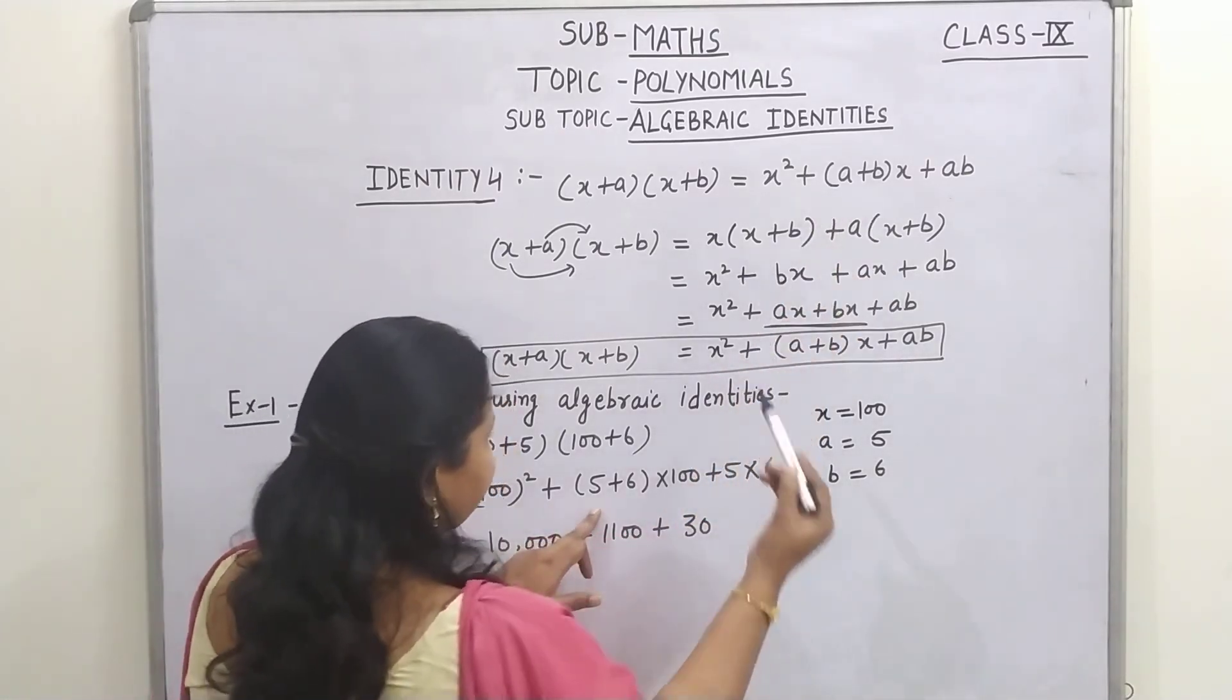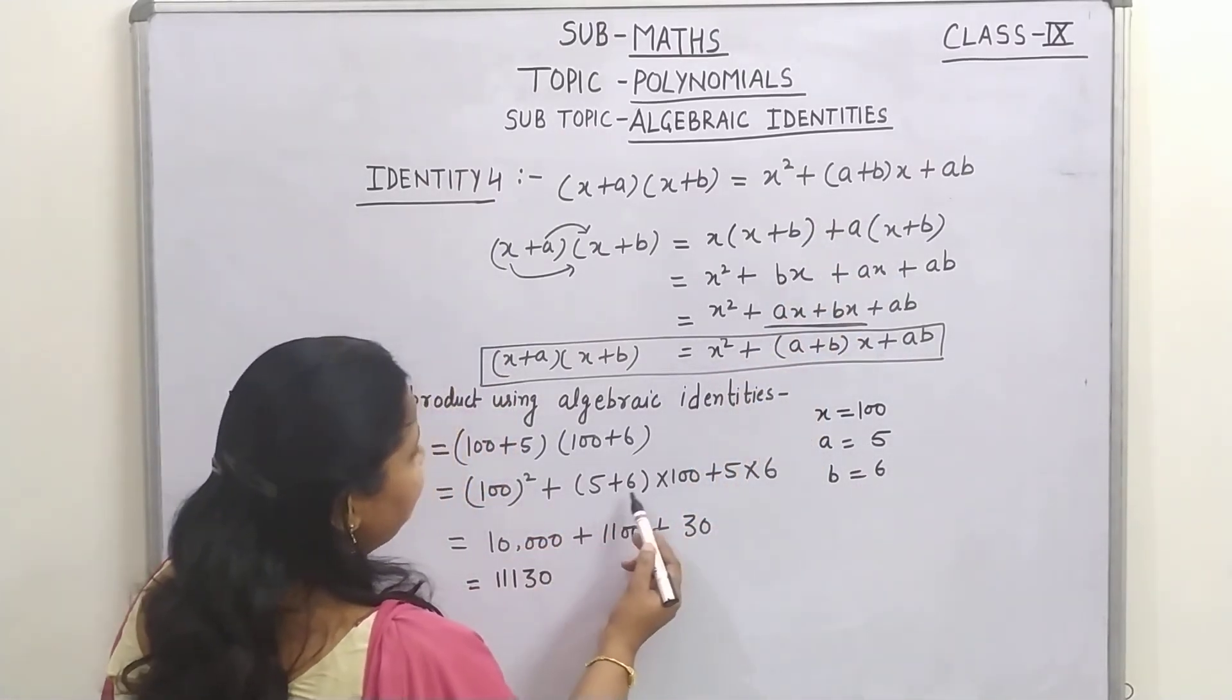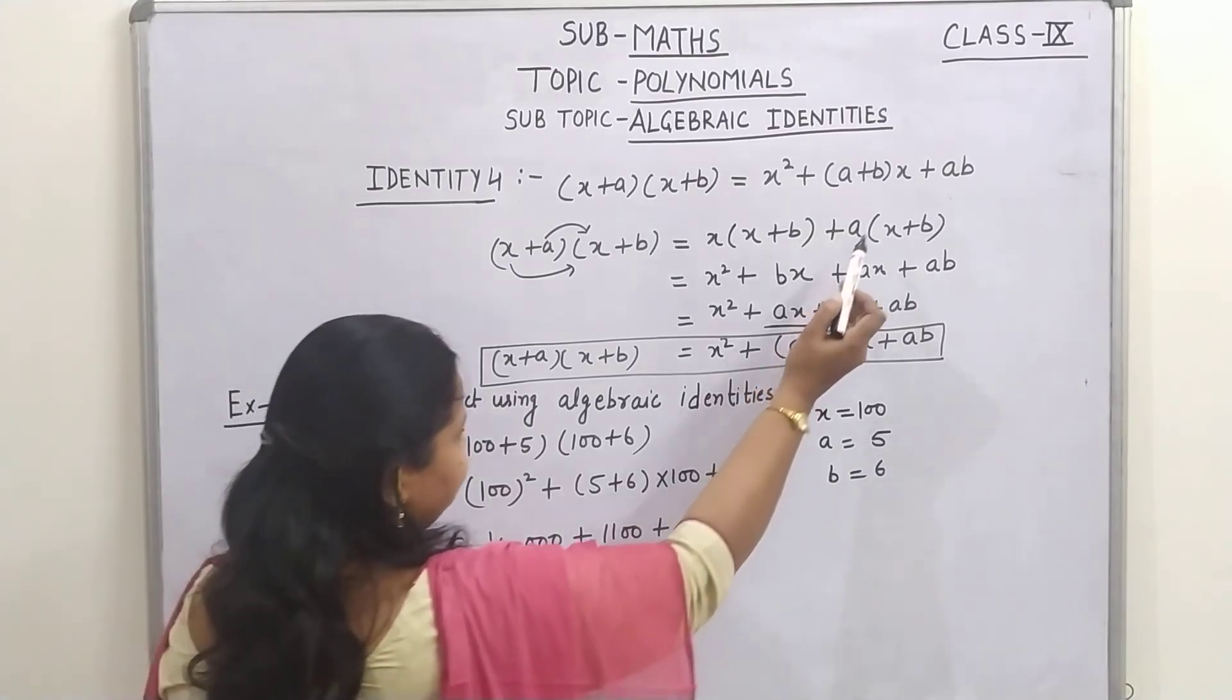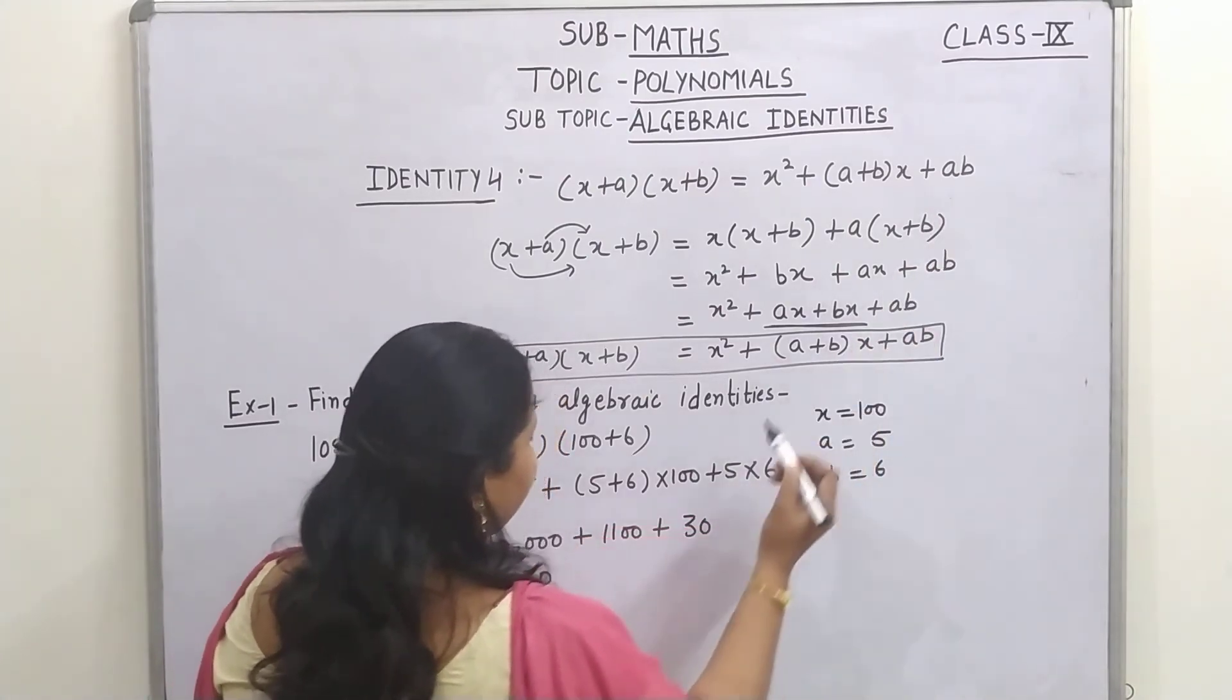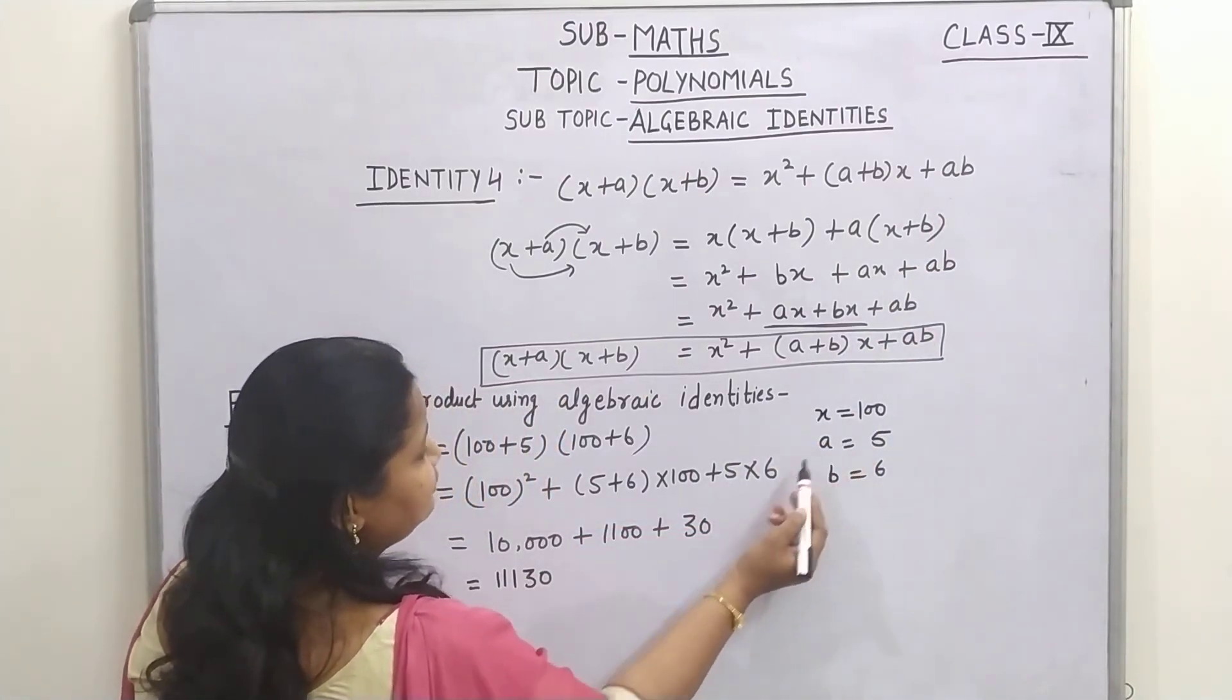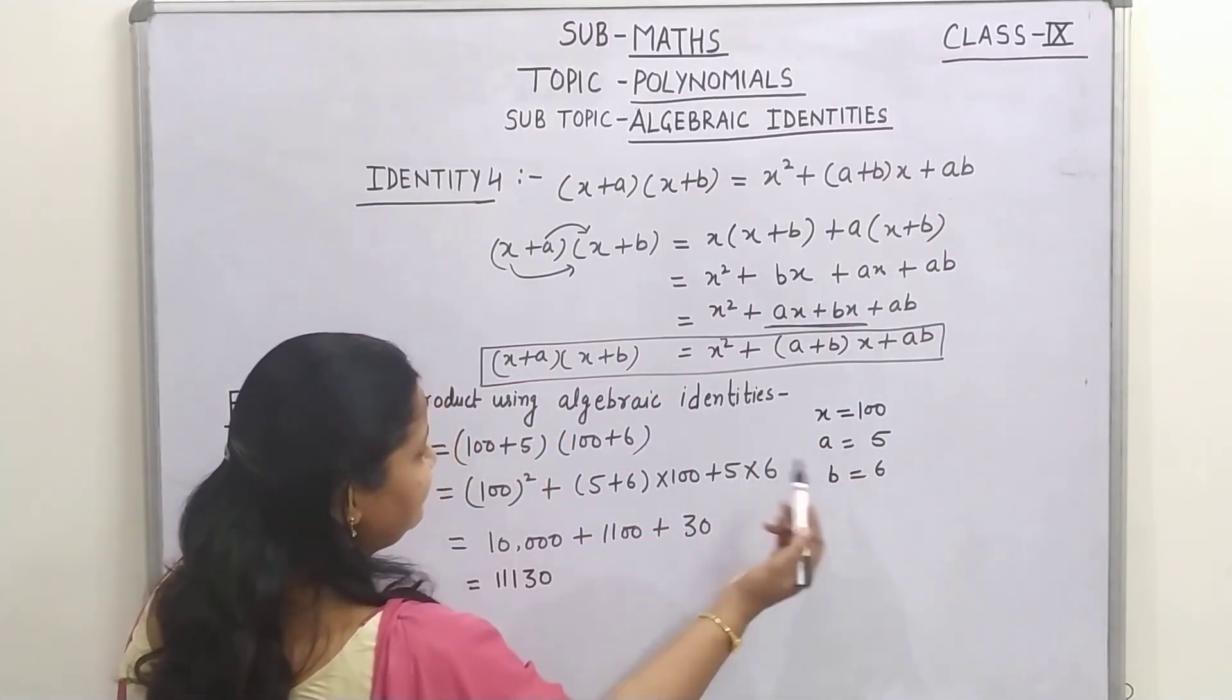in place of a plus b, we can write 5 plus 6 into x, x we can write as 100, plus ab, ab means 5 into 6 because the values of a and b are 5 and 6.